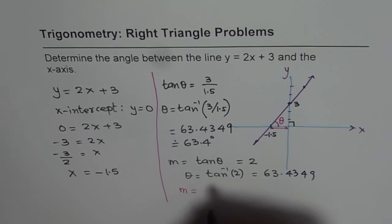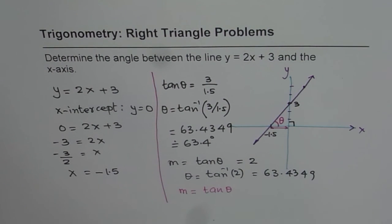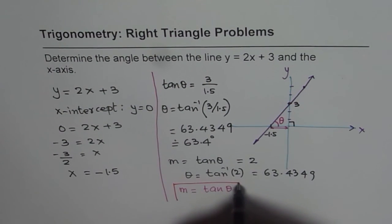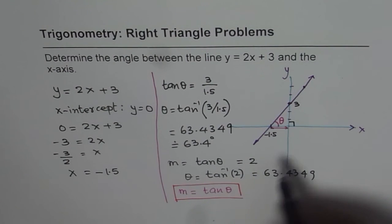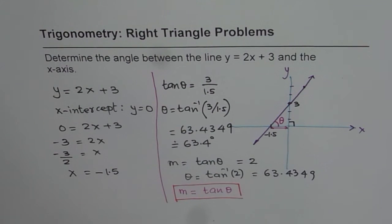So remember, slope of a line equals tan theta. So that is a good thing to learn. And the method to find the angle is find x and y intercepts and then you can find the angle. I hope that helps. Thank you and all the best.